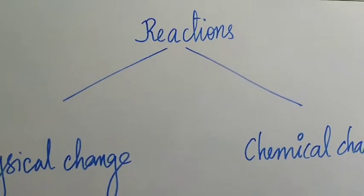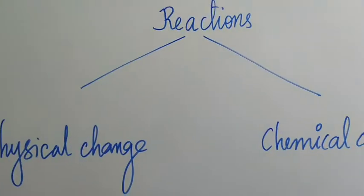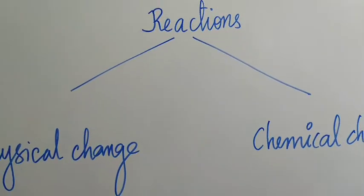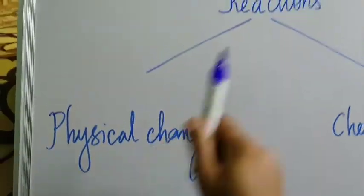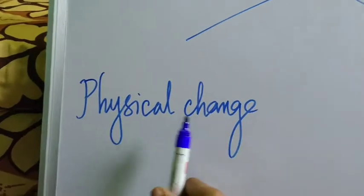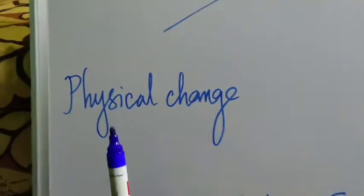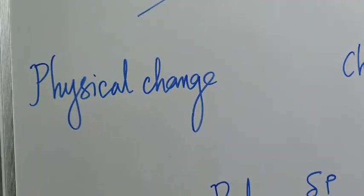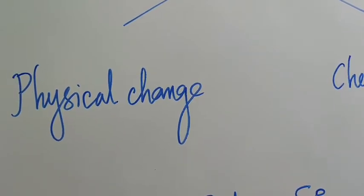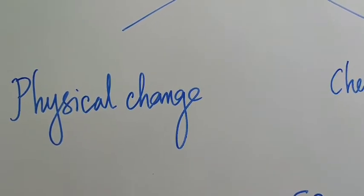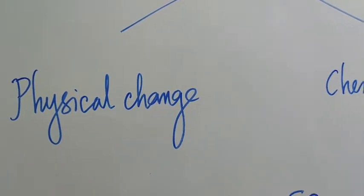Since we are talking about enzymes, there is something we need to understand first. All chemical reactions — you take any chemical reaction — can be either a physical reaction or a chemical reaction. A physical change is one in which the shape of a molecule or a substance changes without breaking of bonds or change in state of matter.